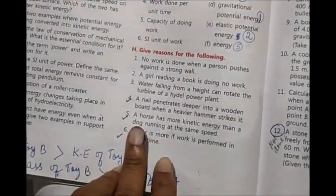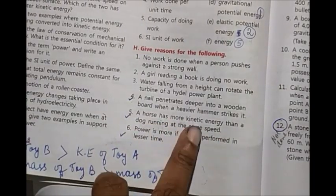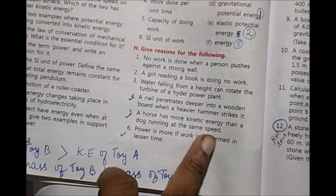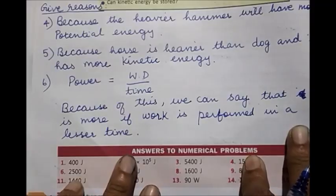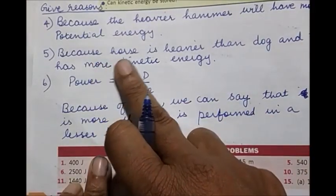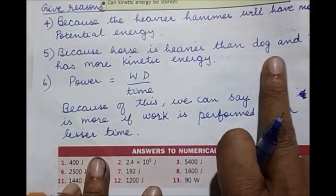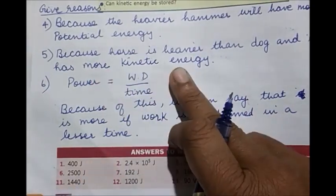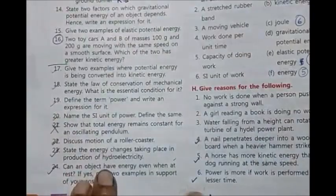Fifth one: A horse has more kinetic energy than a dog running at the same speed. This one also same. Answer will be: because horse is heavier than dog, so it has more kinetic energy.